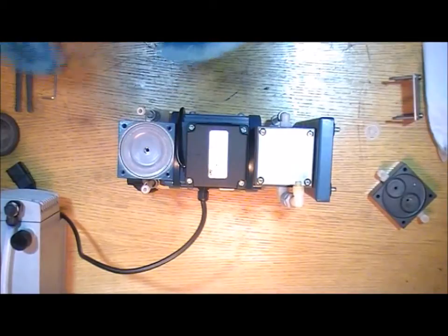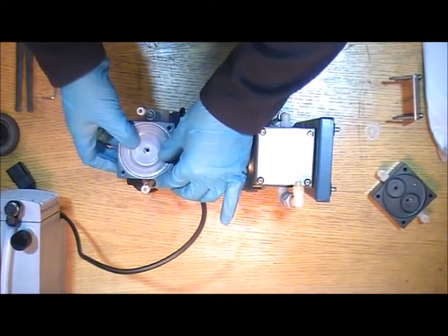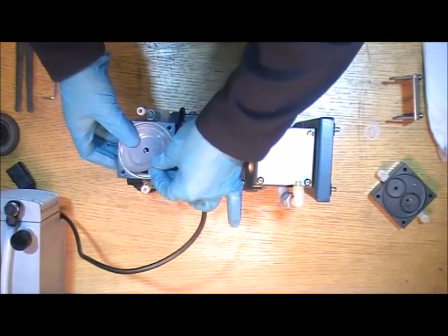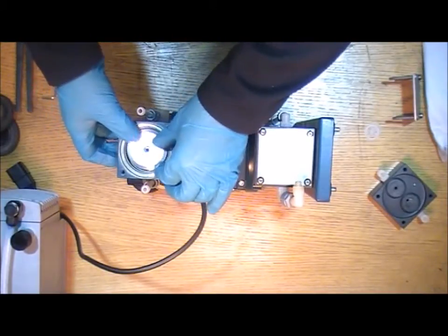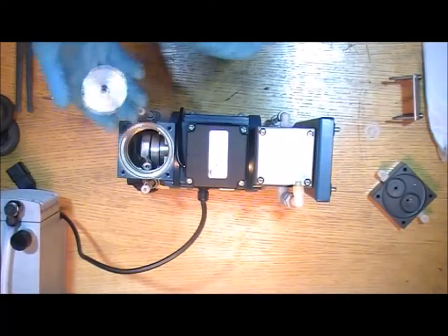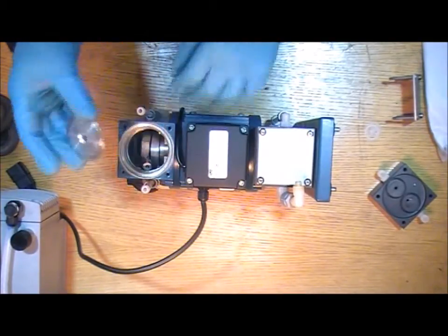Once you take the strain washer out you can see the diaphragm. If you just push on the side of that it'll come away at the opposite and you can lift it out. Underneath there this is called the pressure plate. It's important not to drop it inside the pump but that holds the back of the diaphragm and keeps everything lined up.